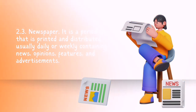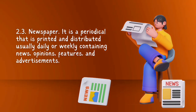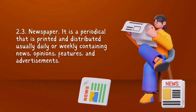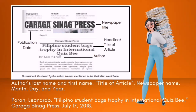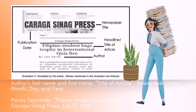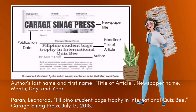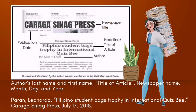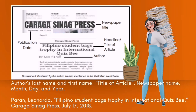Another periodical example is the newspaper — it is a periodical printed and distributed usually daily or weekly, containing news, opinions, features, and advertisements. This is the sample format of writing a newspaper bibliography: author's last name and first name, title of article, newspaper name, month, day, and year. Example: Perrin, Leonardo. "Filipino student bags trophy in International Quizbee." Kariga Synag Press. July 17, 2018. Remember, always follow the correct punctuation marks.